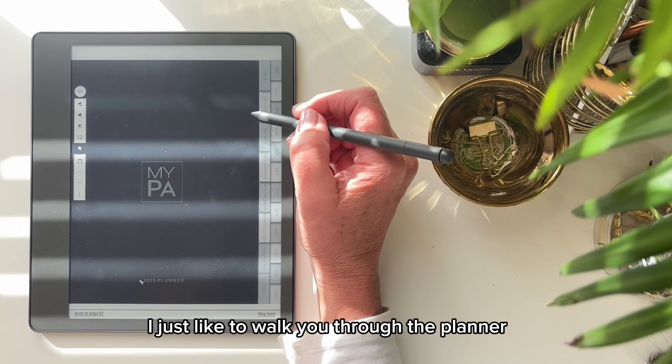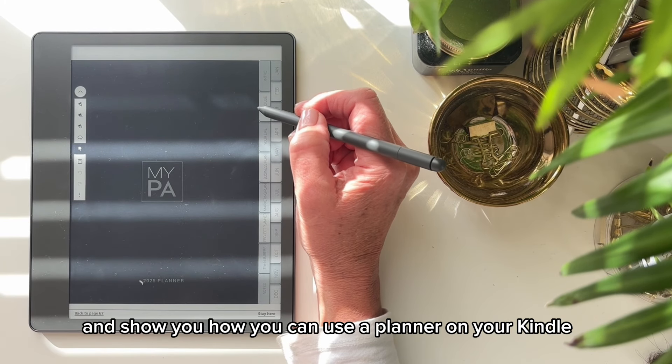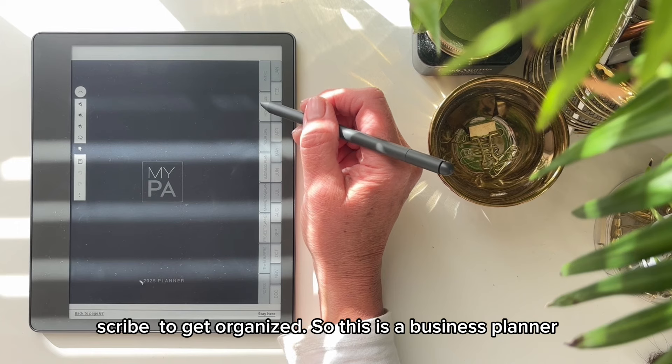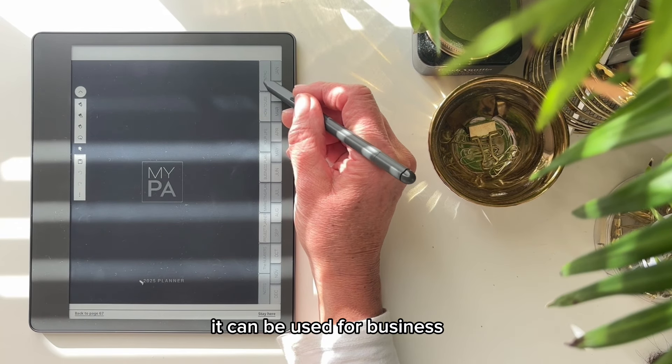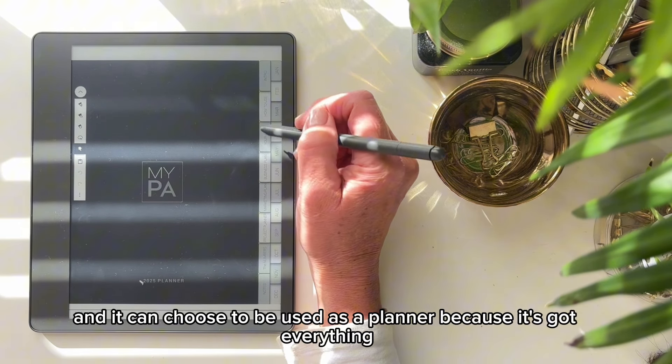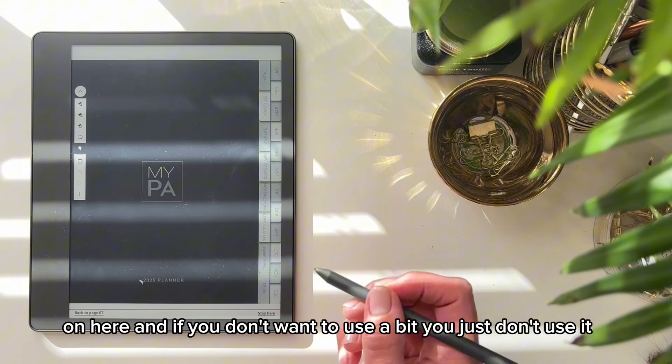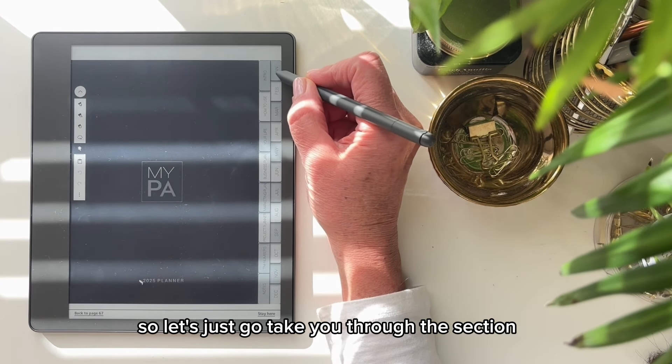So now I'd just like to walk you through the planner and show you how you can use a planner on your Kindle Scribe to get organized. So this is a business planner. It can be used for business and it can be used as a planner because it's got everything on here. And if you don't want to use a bit, you just don't use it.